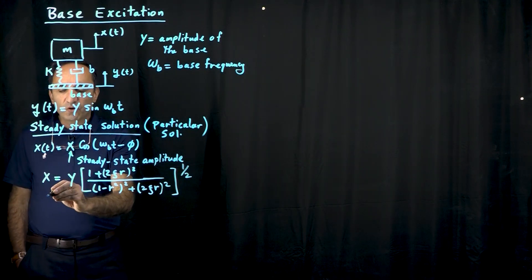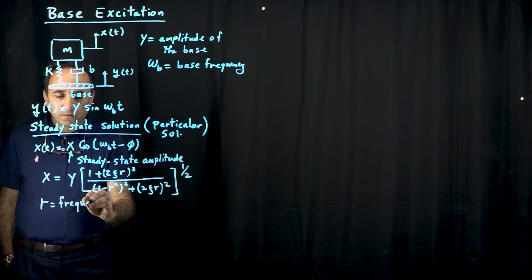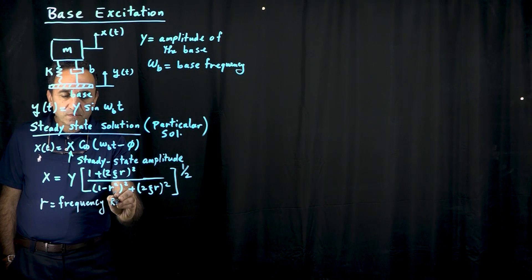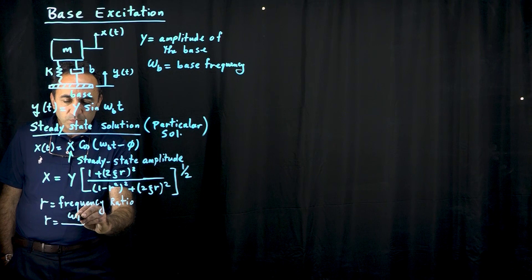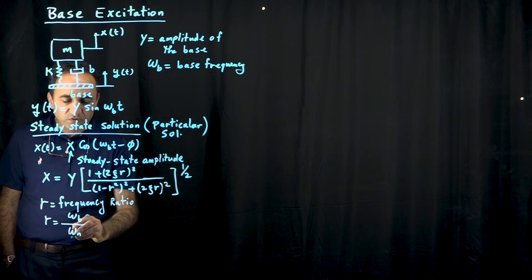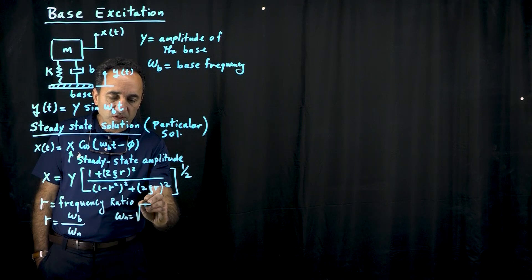Now, r is called the frequency ratio, and that is the ratio of the input frequency to the natural frequency of the system. Now, of course, natural frequency is just simply square root of k over m, and input frequency is the frequency of the base,